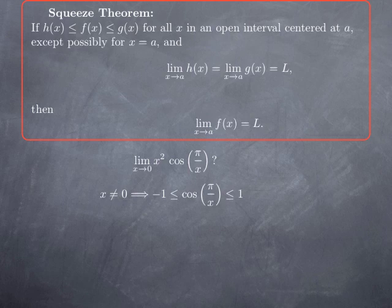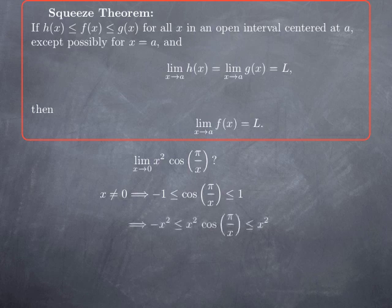However, as long as pi over x is defined, that is for x non-zero, cosine of any value stays between negative one and one. Therefore, if I multiply each term in this inequality by the positive number x squared, I preserve the direction of the inequality, and I obtain that my function x squared cosine of pi over x, which is the one for which I seek the limit at x equals zero, stays between negative x squared and x squared for all x, but x equals zero.